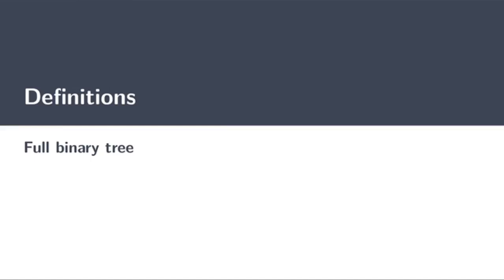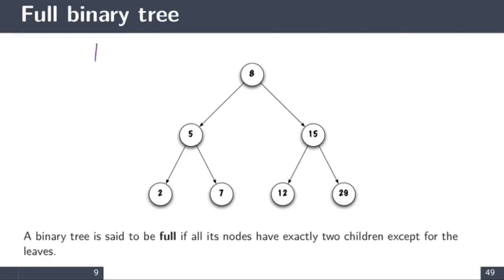The main goal today is to say something formal about the maximum depth of a binary search tree. First, let's define a full binary tree. In computer science, a binary tree is full if all its nodes contain exactly two children except for the leaves. For example, in a tree where nodes 8, 5, and 15 have two descendants while nodes 2, 7, 12, and 29 are leaves with no descendants — such a tree is called a full binary tree.